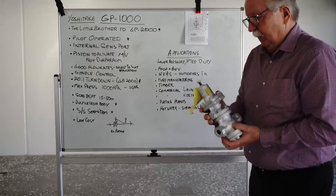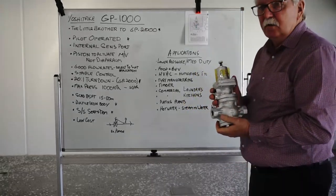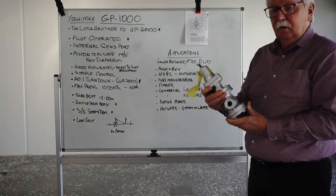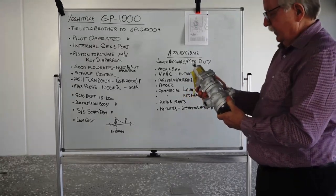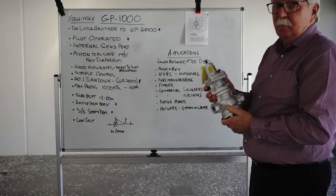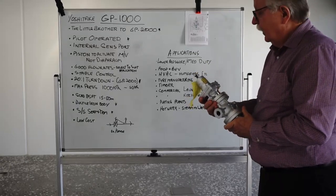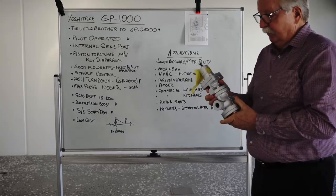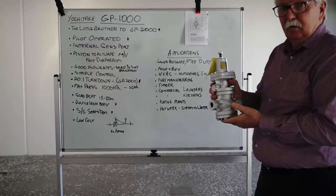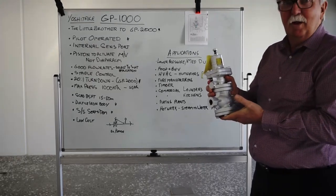Today we're going to have a look at the Yoshitake GP1000 series pressure reducing valve. This particular model we have here is a half inch screwed BSPT and it's classed as a GP1010. Now there's a few differences between this and the GP2000. I call it the GP2000 little brother.